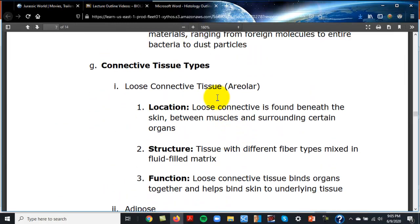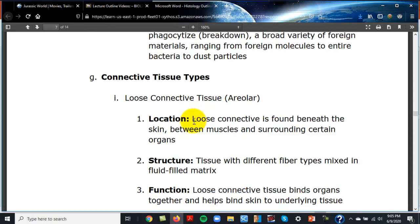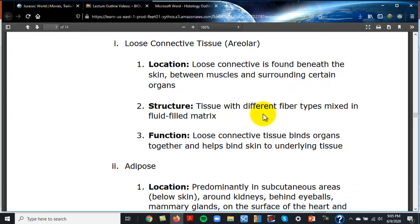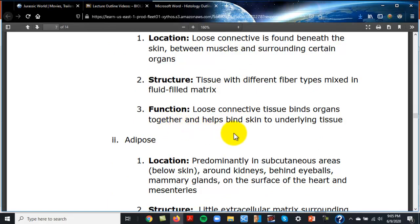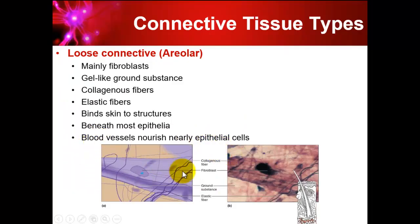The first connective tissue is loose connective tissue, also called areolar tissue. It's called 'loose' because it's all spread out. It's found beneath the skin and between muscles — its main function is binding skin to underlying tissue. It contains collagenous fibers, elastic fibers, and ground substance.